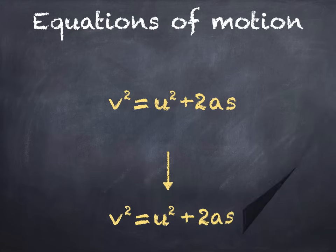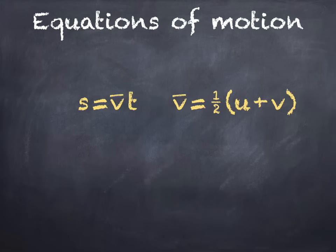The last derivation is the simplest. We start with these two equations. The first says that displacement is equal to average velocity times time, and the second is an equation for average velocity v bar, which is half times u plus v. We then end up with this.